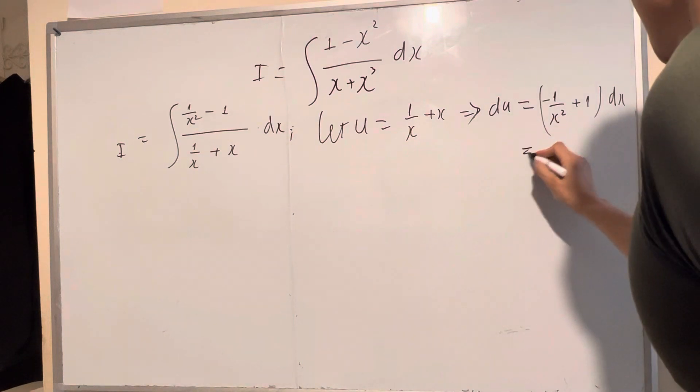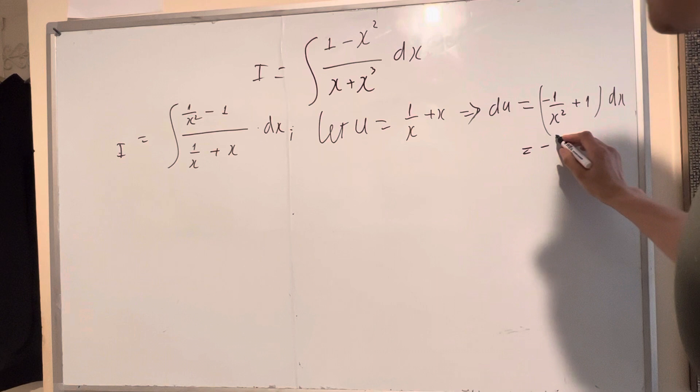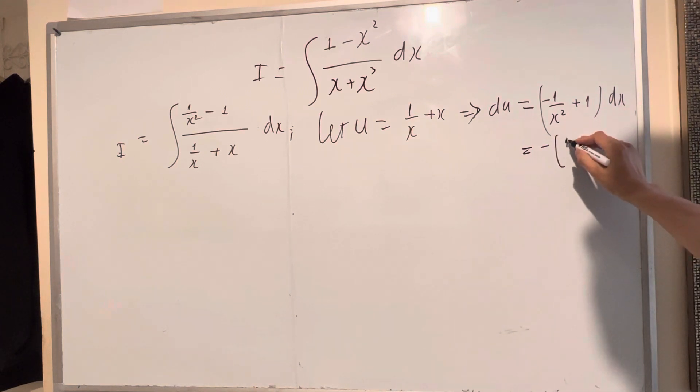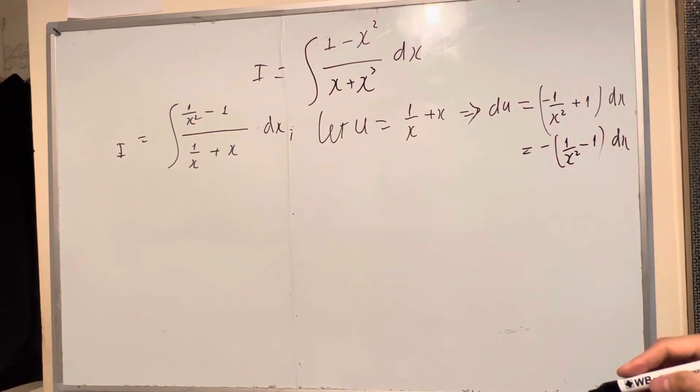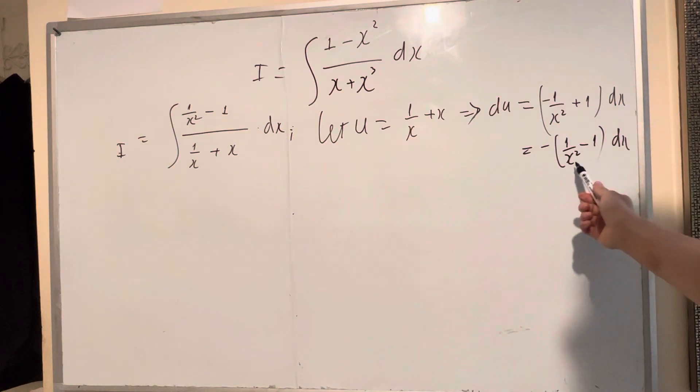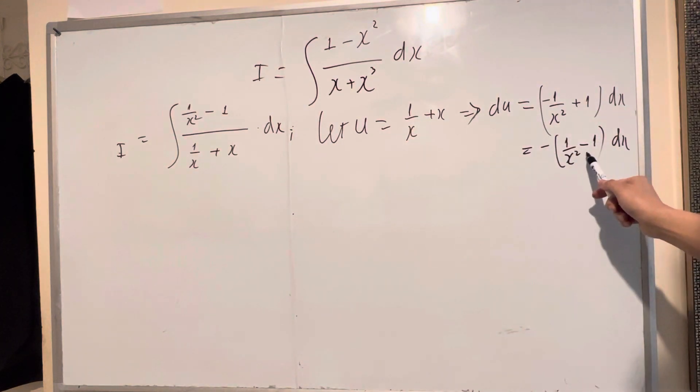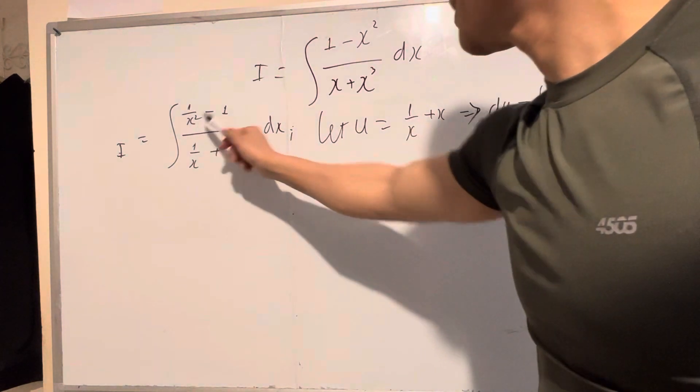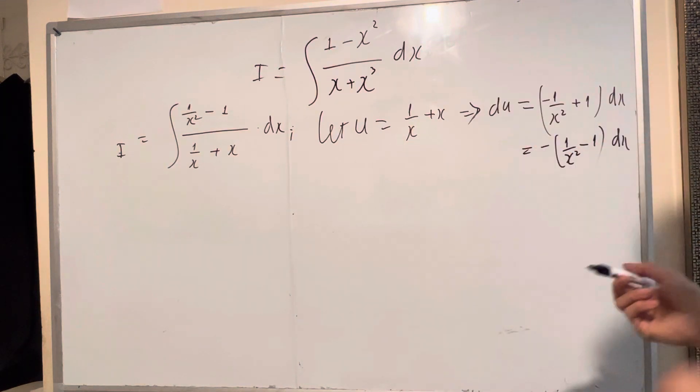Okay, so du equals negative 1 over x squared plus 1 dx. You make that similar, 1 over x square plus 1, to match the form. And you do the next step, more simple.